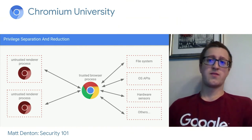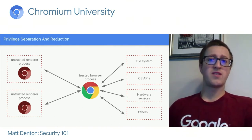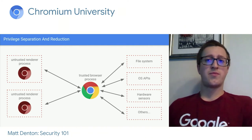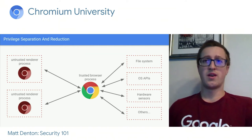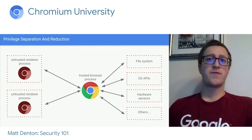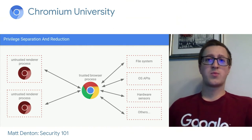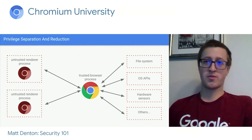Chromium limits the impact of such bugs through process isolation and sandboxing. Chromium is made up of many OS-level processes. Web content like HTML and JavaScript is parsed, interpreted, and rendered in untrusted render processes, which are spawned by a fully privileged browser process. The browser process manages access to all the resources like your file system, OS APIs, geolocation, camera, and microphone.